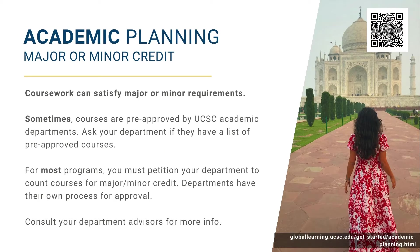Coursework can satisfy major or minor credit. Sometimes, courses are even pre-approved by UCSC academic departments. Ask your department if they have a list of pre-approved courses. For most programs, however, you must petition your department to count courses for major or minor credit. Departments have their own process for approval. Consult your department advisors for more info.